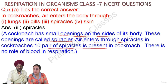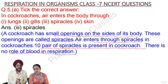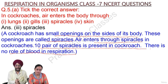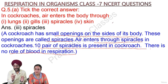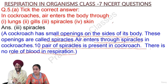There are 10 pairs of spiracles present in a cockroach, and blood plays no role in respiration. These spiracles are spread across the cockroach's body, through which air enters. Each cockroach has 10 pairs of spiracles.